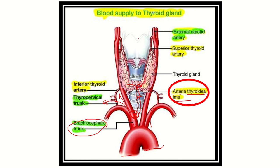The thyroid ima artery is a minor branch that supplies the thyroid gland, since the thyroid gland receives most of its supply from the superior and inferior thyroid arteries. The thyroid ima artery arises from the brachiocephalic trunk, ascends upward, and ends in the thyroid gland. The superior thyroid artery is the first branch of the external carotid artery.